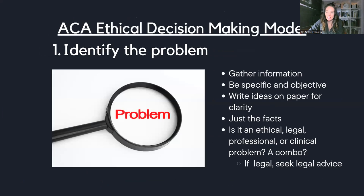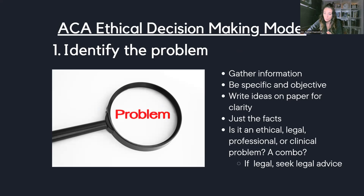Step one of the ACA ethical decision-making model is to identify the problem. That sounds easy enough, but when you're identifying the problem, ACA outlines some very specific things. We've got to be very specific, factual, and detail-oriented. Sometimes it's even helpful to write it down on paper for good clarification. Think about whether it is an ethical, legal, professional, or clinical problem — or a combination of these. If it's a legal problem, then you're also going to need to seek legal advice.